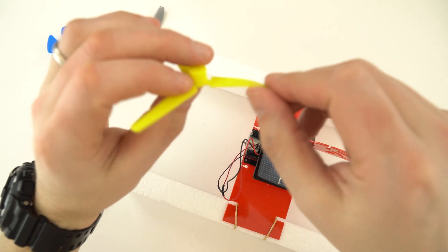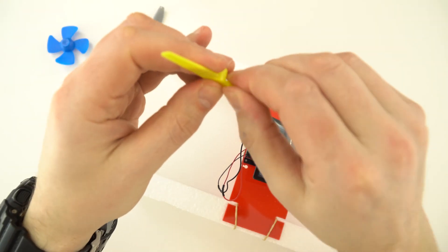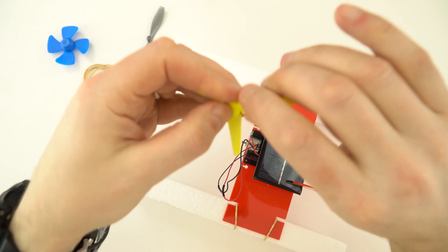And finally we need a propeller. I'm just going to use this yellow one here. And what I'm going to do is I'm just going to twist all of these blades in the same direction.